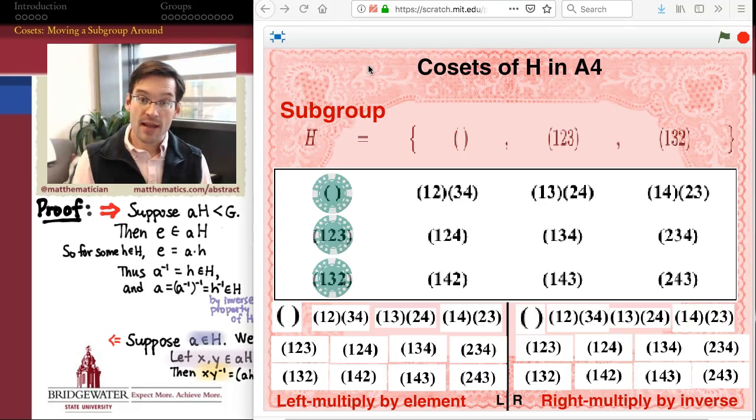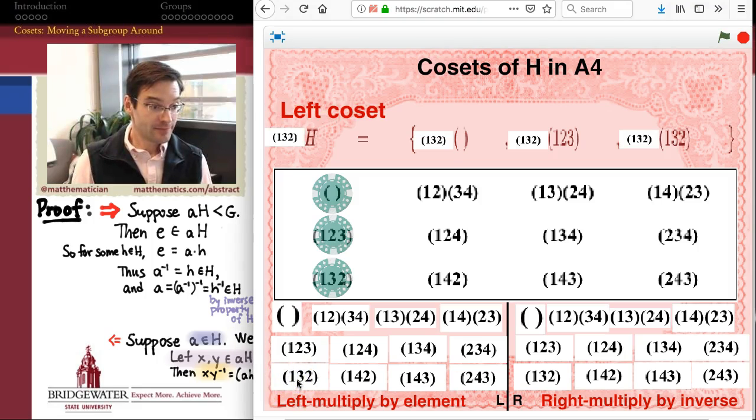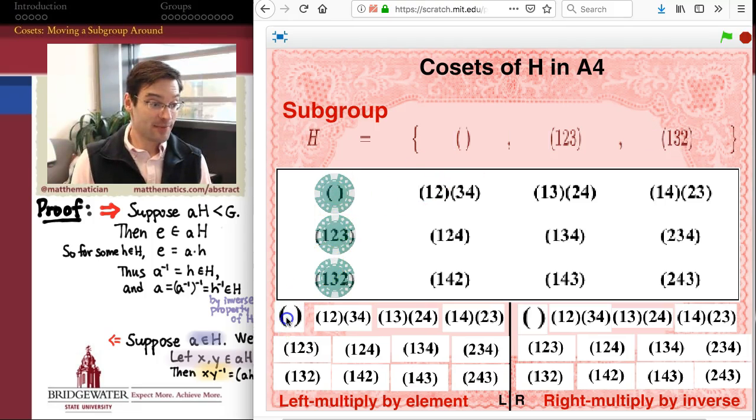Looking again at our example of A4, and the subgroup generated by the three-cycle (1,2,3), the question is, what subgroup am I going to get by applying, say, a left action by one of these three elements? Let's say I apply a left action by (1,3,2), what subgroup am I going to get? Well it turns out that that subgroup is exactly the same as the original subgroup H. It's a left coset, but it also happens to be a subgroup.